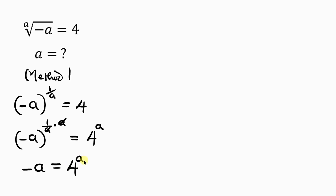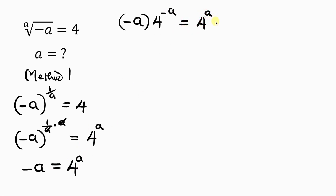Our next step will be to make the right hand side equal to 1 — a unity. We can do that by multiplying both sides by 4 to the negative a. So for the left hand side, I have negative a multiplied by 4 to the negative a, equal to 4 to the a multiplied by 4 to the negative a on the right hand side.